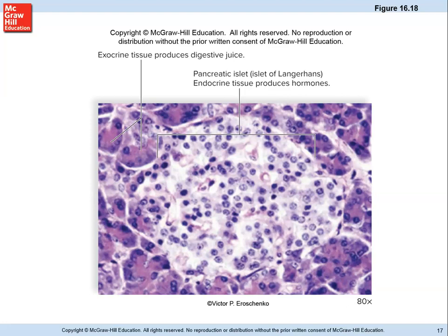The pancreas is the most well-known endocrine gland because of its connection to diabetes. Within the islets of Langerhans, the pancreas regulates blood sugar by producing insulin and glucagon. Insulin lowers blood sugar, while glucagon raises it — stimulating release of sugar into the blood when levels drop between meals. It's a balance: glucagon raises blood sugar when it's too low, and insulin drives sugar into cells when levels are too high.